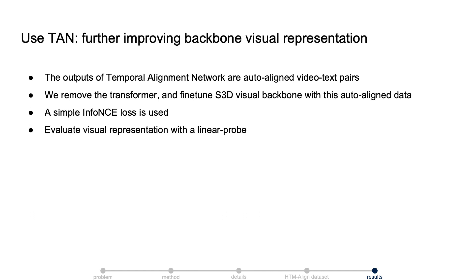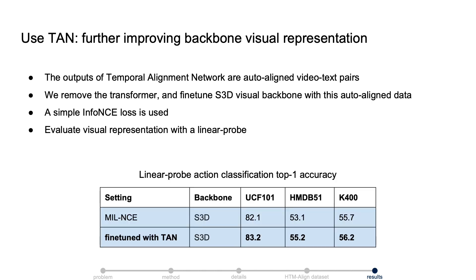Lastly, since the output of our TAN are auto-aligned video text pairs, we can use this data to improve the backbone visual feature. In this case, we can remove the transformer and simply fine-tune the visual backbone with an infoNCE loss. We show that after a quick fine-tuning, the quality of the visual backbone is improved because of this auto-aligned video text paired data. Thank you.